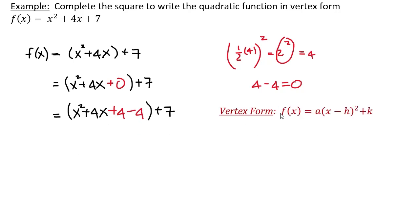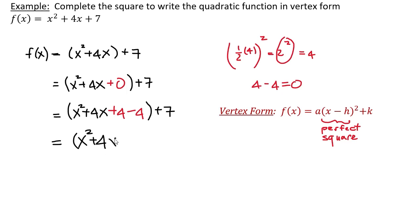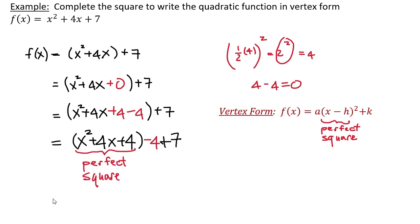Remember, vertex form has the form f of x equals some constant a multiplied by x minus h all squared — a perfect square — plus k. So I need to get a perfect square. I have x squared plus 4x plus 4, which is a perfect square. Taking the negative 4 outside the parentheses gives minus 4, then plus 7. That perfect square gives me x plus 2 all squared, and negative 4 plus 7 is plus 3.